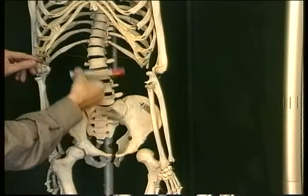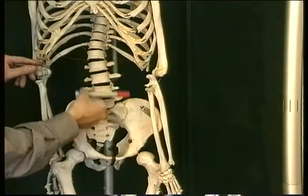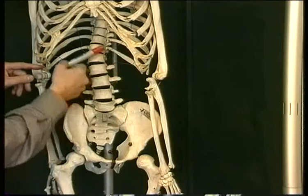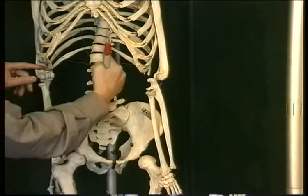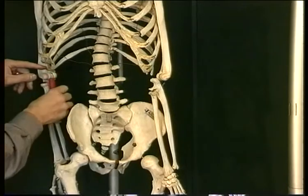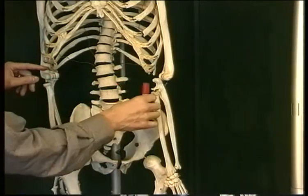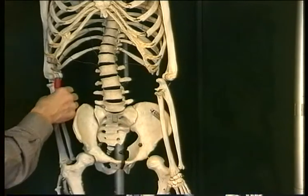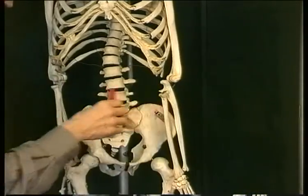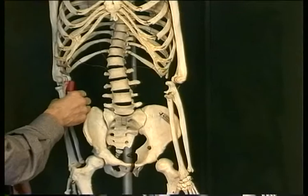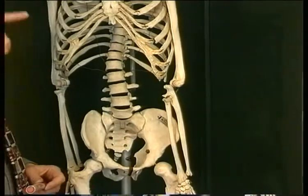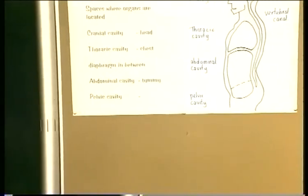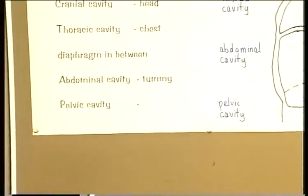This would all be abdominal cavity in life. You see, this isn't really surrounded by bones, although there is the vertebral column — the lumbar vertebrae at the back — but in life this is surrounded by sheets of muscle which comprise the wall of the abdominal cavity. So: thoracic cavity, diaphragm in between, abdominal cavity — the tummy — below that.